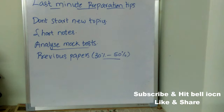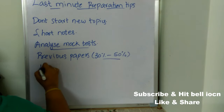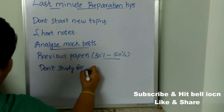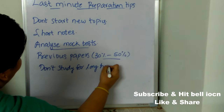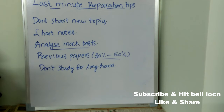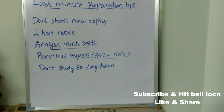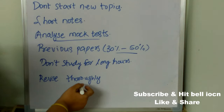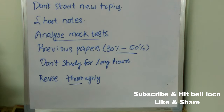Don't study for long hours — if you sit and study for too long, whatever you read will not be retained; you'll get bored. Instead, make slots: read one subject for two hours, then shift to another subject for two hours, and so on. For every two hours, take at least a 10-to-15-minute break. Make sure you revise thoroughly whatever you have already read — don't start any new topic.